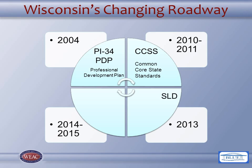Specific Learning Disabilities. By December 1, 2013, in order for students to qualify as having a specific learning disability under state and federal law, IEP teams must document progress monitoring of general education interventions. This intervention framework in general education is otherwise known as RTI and PBIS. Through documentation of a response to intervention, students will qualify for special education services for learning disabilities. Positive behavior intervention strategies are used to address behavioral issues in schools.